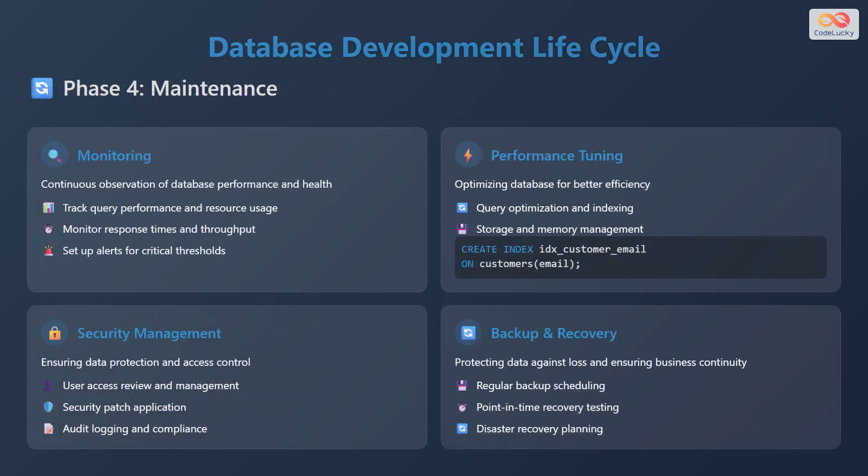The final phase is the maintenance phase. The maintenance phase involves ongoing activities to keep the database running smoothly and efficiently. This phase includes four main areas. Monitoring involves continuous observation of database performance and health. This includes tracking query performance and resource usage, monitoring response times and throughput, and setting up alerts for critical thresholds.